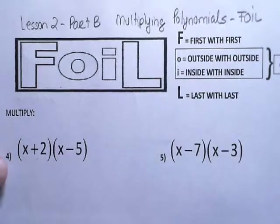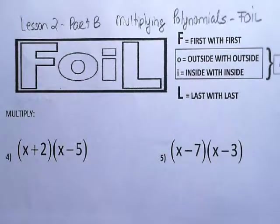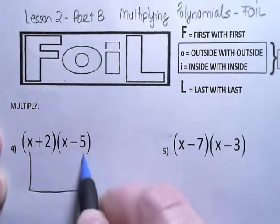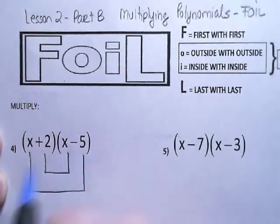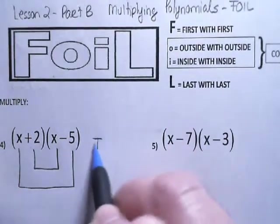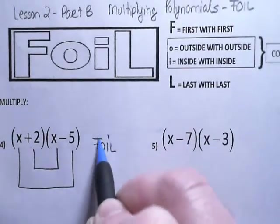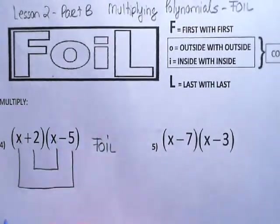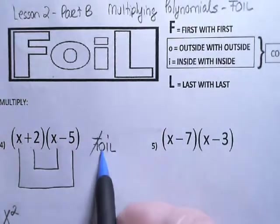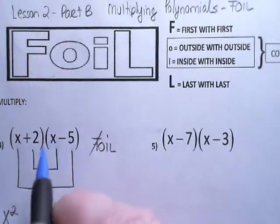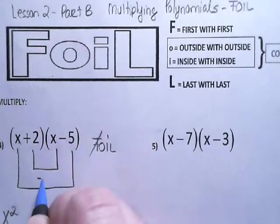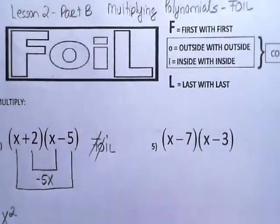Basically here I have a binomial multiplied by a binomial. So I'm going to draw these two boxes. Following FOIL — F is for first times first, so x times x gives you x squared. So we're done with the F. And then O stands for the outside times the outside, so x times negative 5 is negative 5x. We're done with the O.